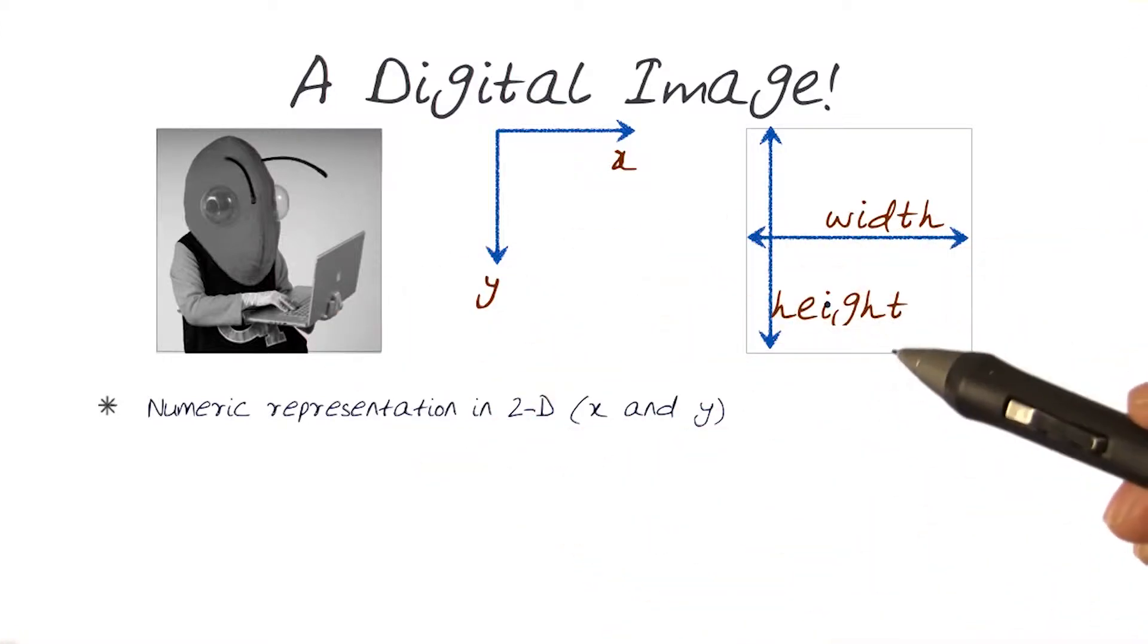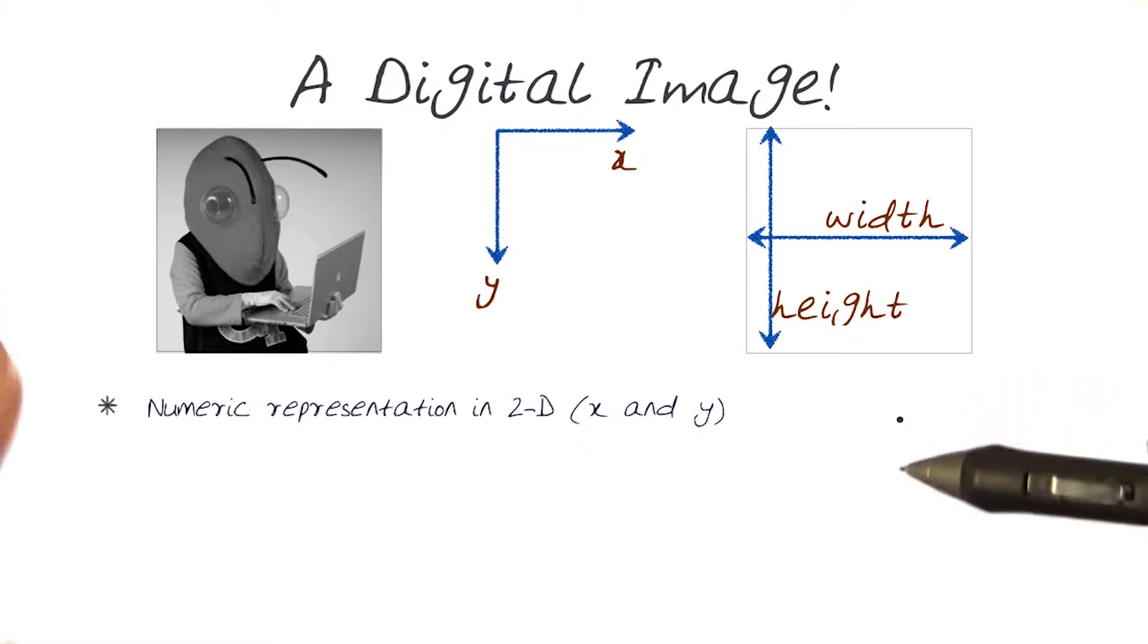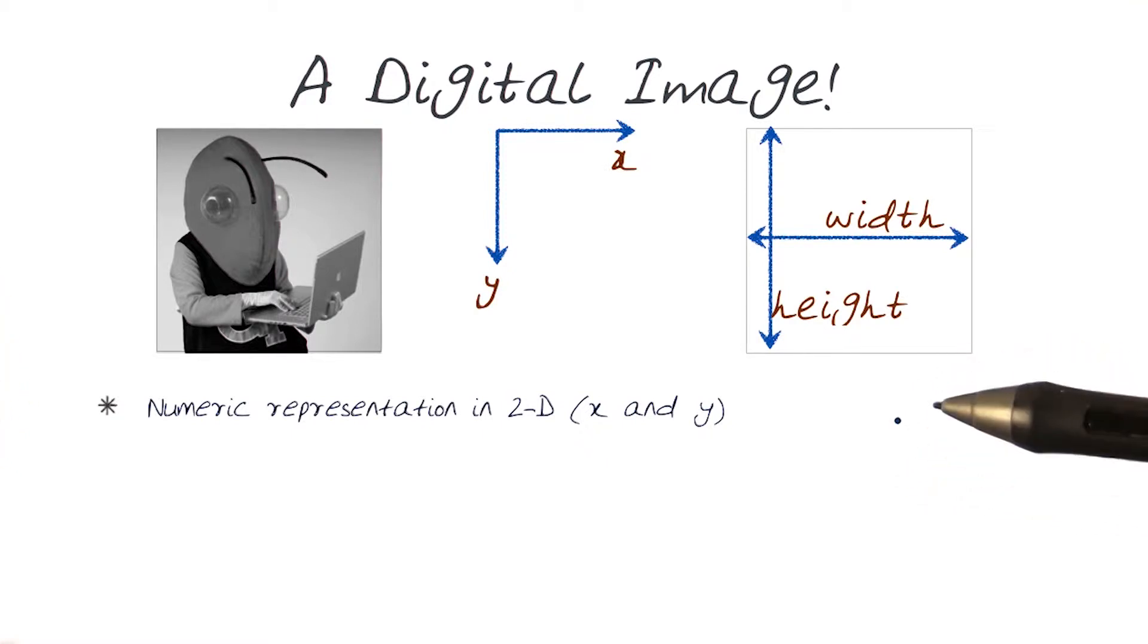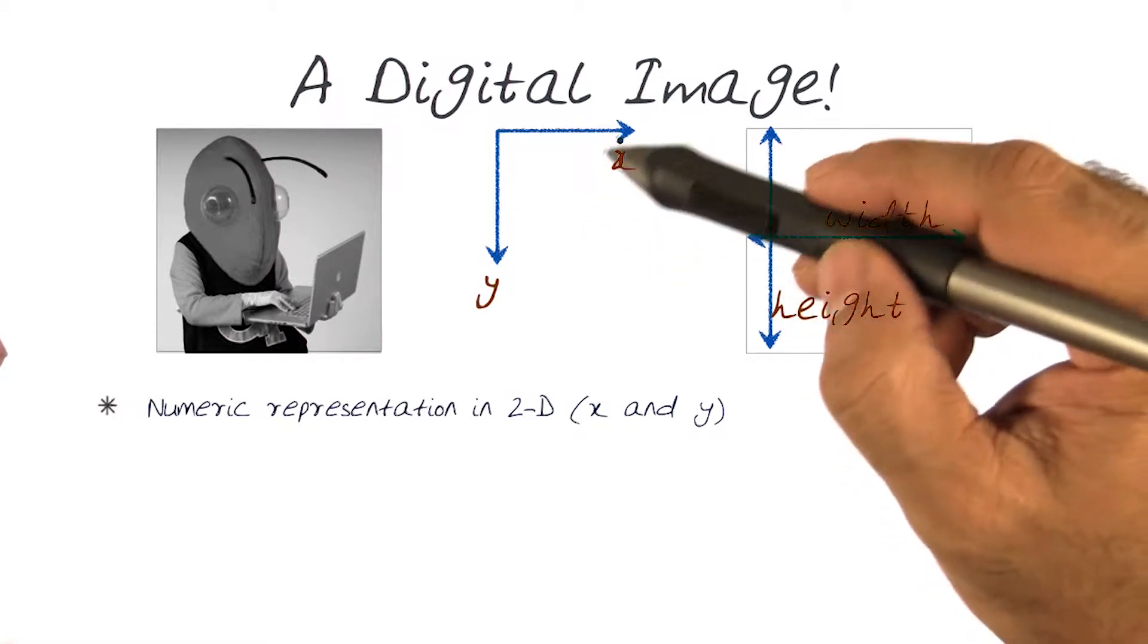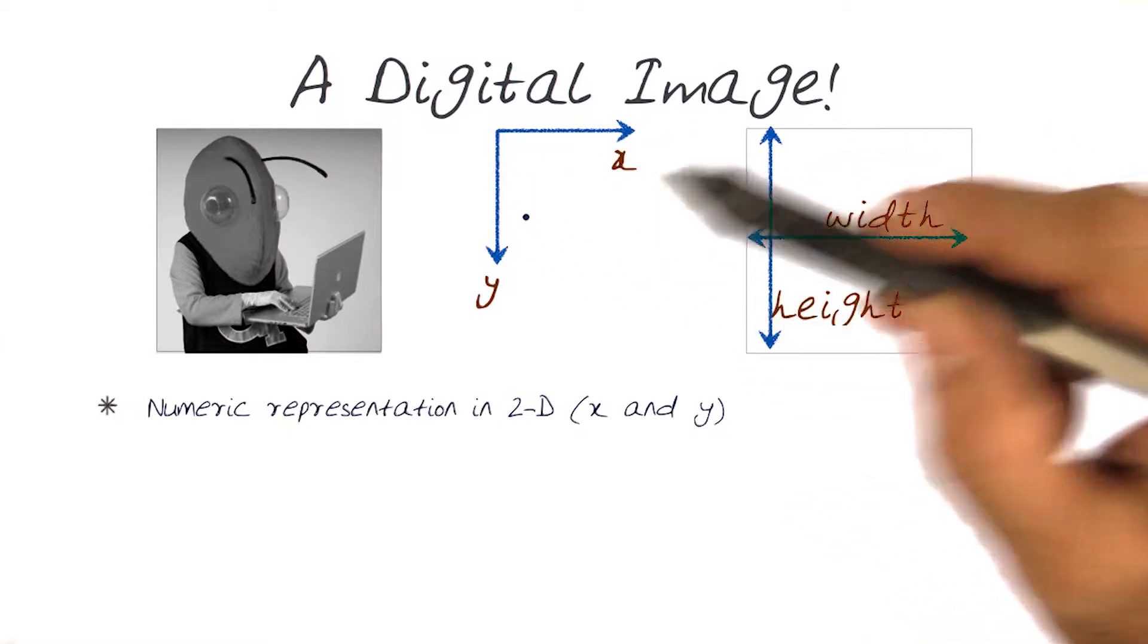So now, we have the buzz image. We know it has a width and height. Basically, we want to use this to give it a numeric representation of this image in two dimensions, so we can actually be looking for information in the x and y directions.